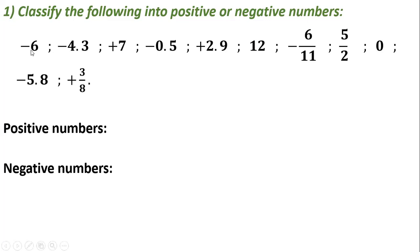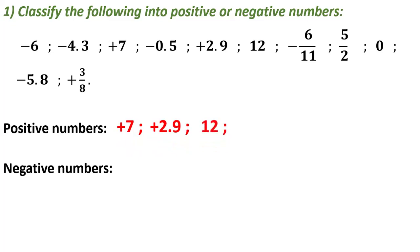Let me start: minus 6 is not positive since it's preceded by a minus. Minus 4.3 is not positive. Plus 7 has a plus so it is a positive number. Minus 0.5 is not positive. Plus 2.9 is a positive number. 12 has no sign so it's positive. Minus 6 over 11 is negative. 5 over 2 has no sign so it's considered positive. Zero is considered both positive and negative.